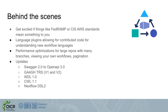Behind the scenes, you can get excited if things like FedRAMP or CIS AWS standards mean something to you. We've also added language plugins, allowing new workflow languages to contribute code to help us understand those workflow languages — this is in part how we managed to add Galaxy support to DocStore. We have a lot of performance optimizations in the background for things like large repos with many branches, for viewing your own workflows, or for paging through workflows.